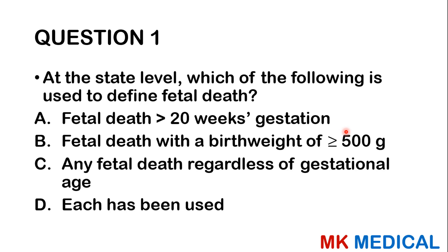Question one: At the state level, which of the following is used to define fetal death? Option A, fetal death greater than 20 weeks gestation. Option B, fetal death with a birth weight of greater than 500 grams. C, any fetal death regardless of gestational age. D, each has been used.